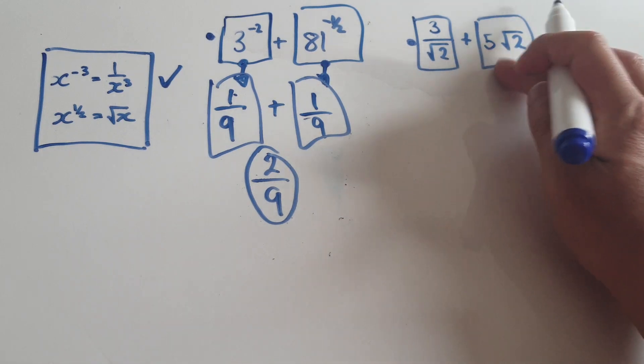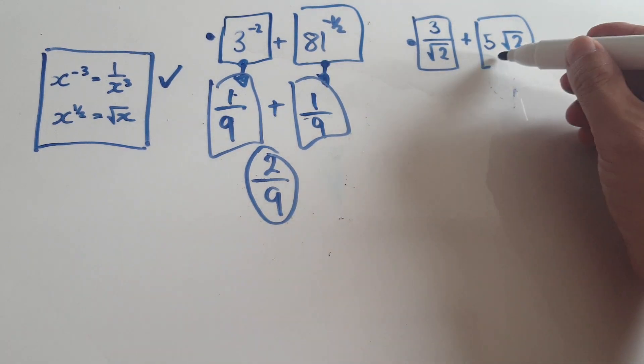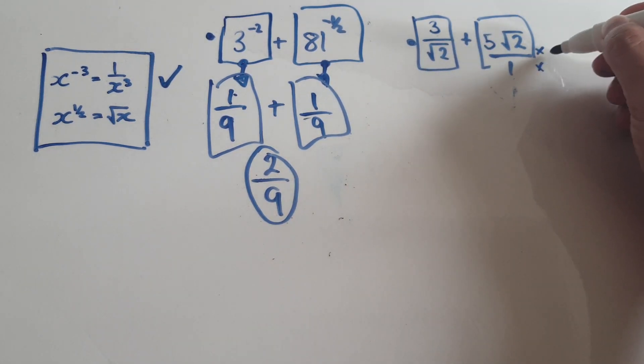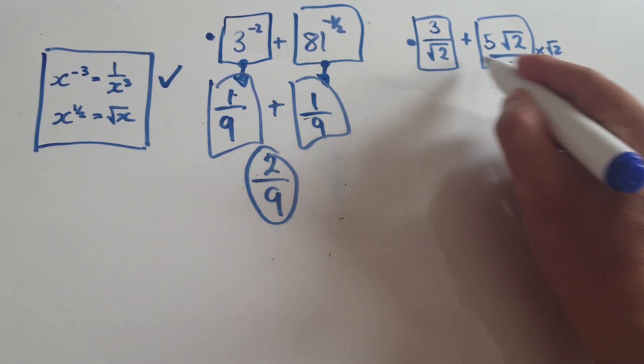Let's imagine this as being over 1. Now we want the two denominators to be the same, so we would times top and bottom here by the same thing. That same thing happens to be root 2, because we want the two denominators to be the same.